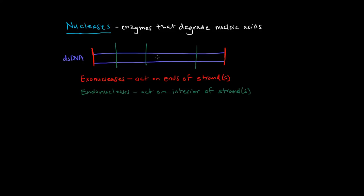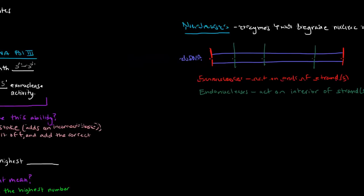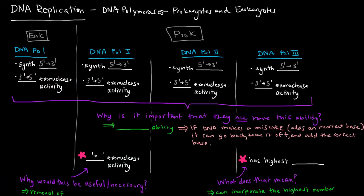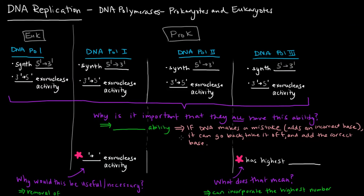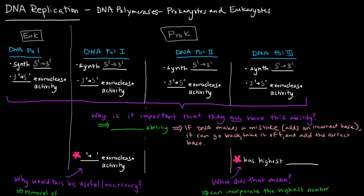So now, knowing that, let's think about what exonuclease activity means in terms of these DNA polymerases. Well, we mentioned they all have 3' to 5' exonuclease activity, and they all synthesize 5' to 3'. Let's think about this.